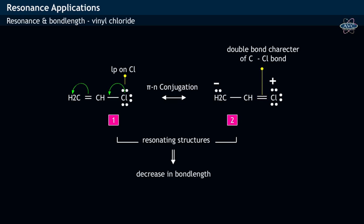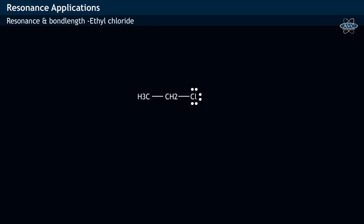That is, shortening of bond length occurs in vinyl chloride, while in the case of ethyl chloride no such resonance occurs.